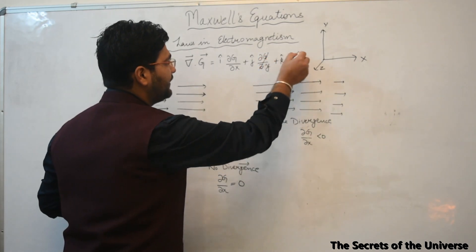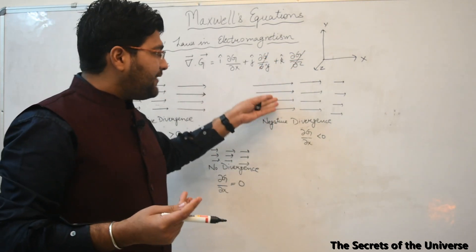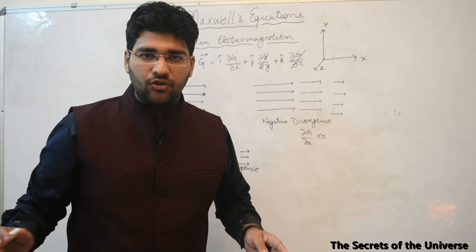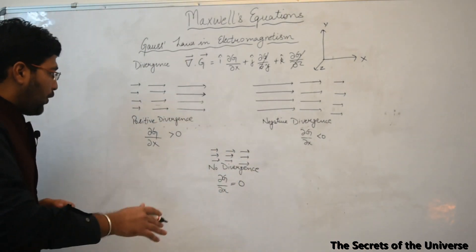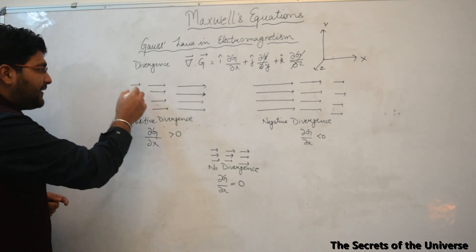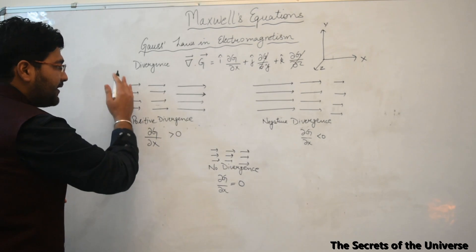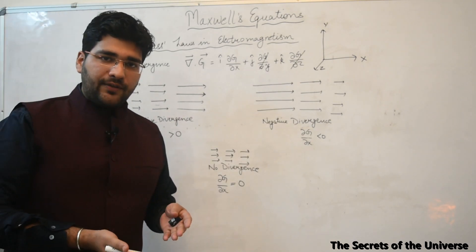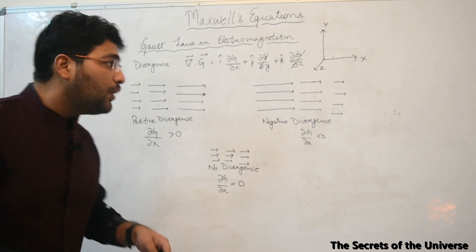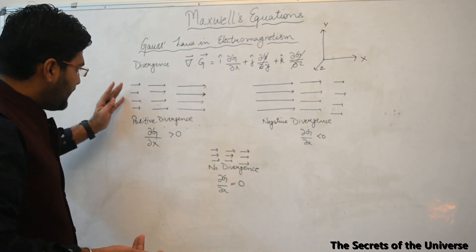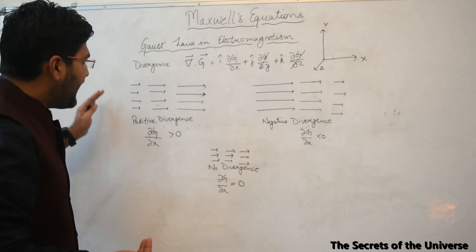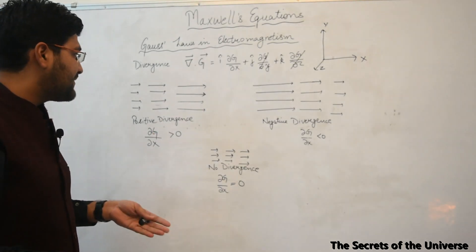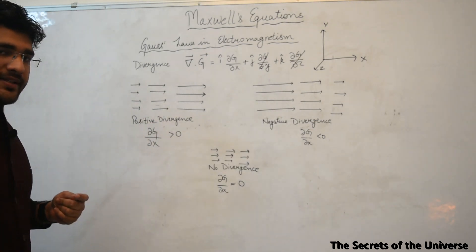For simplicity, I'll assume that G is only along the X direction, with no field along Z or Y directions and no change along those directions. The magnitude of G is increasing along the increasing X direction — the strength of the field is directly proportional to the length of the arrow. So the arrows are shorter at the start but get longer as they move along X.